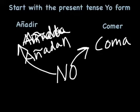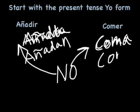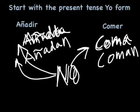For comer, it would be coma or coman. And for either one of these, if you wanted to make it negative, simply put a no in front of them: no añada, no añadan, no coma, no coman.